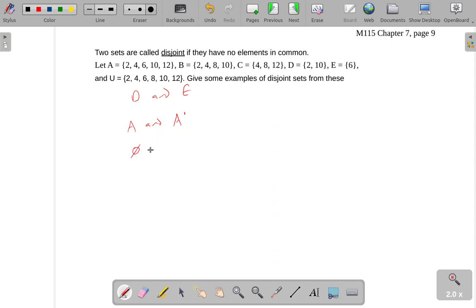You could say actually something like the empty set and B. These would be disjoint because, well, clearly there's nothing in common between the empty set with anything. So they would be disjoint.